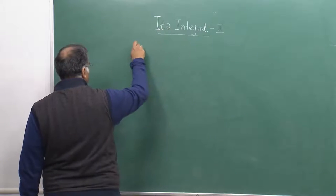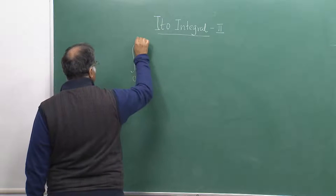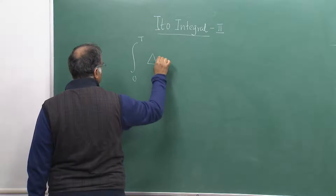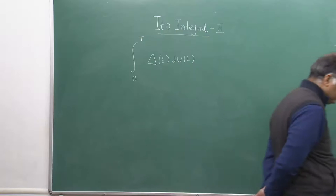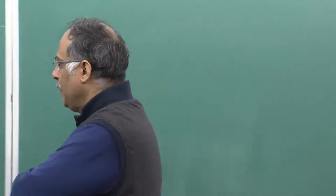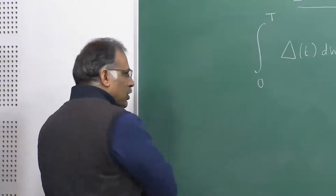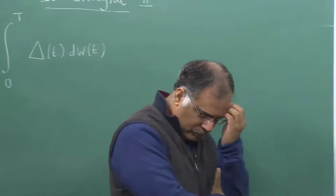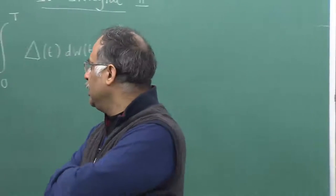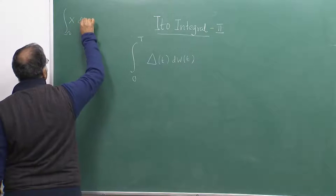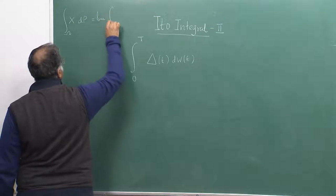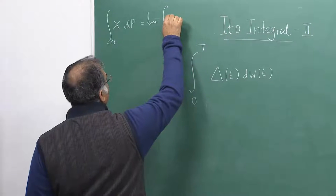We are now going to talk about the Itô integral for a general process — this is no longer a simple process, it is essentially a general one. If you look back at the sections on expectation, you will see we have tried to define an integral of a random variable defined over a probability space as a limit of these integrals.